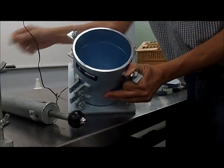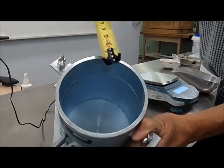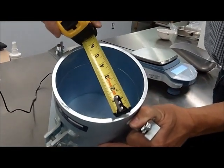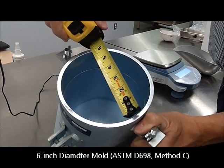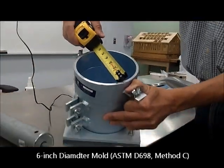For oversized material, it could be requiring the use of a 6 inch diameter mold. And that's the ASTM method C.